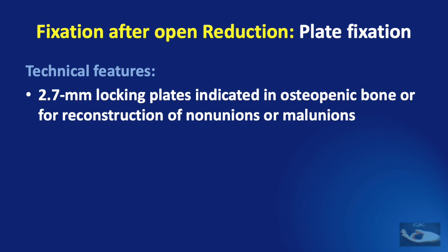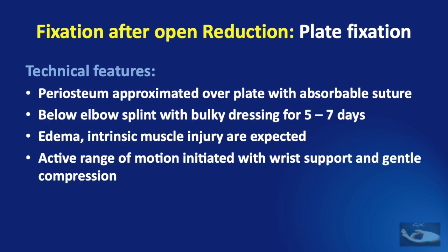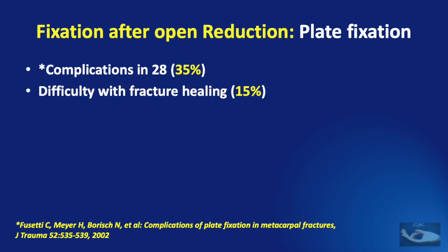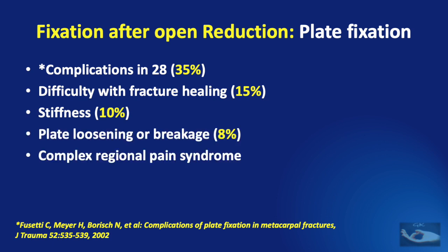For osteopenic bone or reconstruction of non-unions or mal-unions, 2.7 mm locking plates are indicated, and extensive periosteal stripping is not required. After fixation, the periosteum should be approximated over the plate with absorbable suture. A below-elbow splint with bulky dressing should be applied for a minimum of one week. Active range of motion can be initiated with wrist support. A study revealed that complications after plate and screw fixation were seen in 35% of patients: difficulty with fracture healing in 15%, stiffness in 10%, plate loosening or breakage in 8%, and complex regional pain syndrome and infection in others.